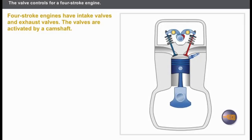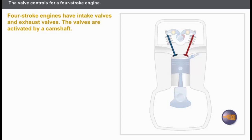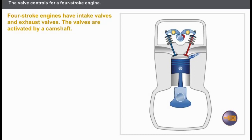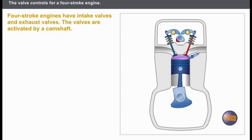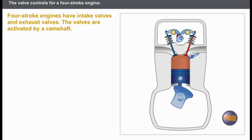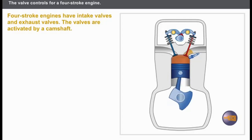Let's first examine the basic principles of four-stroke engines. The four-stroke engine uses valves to operate; the valves are activated by a camshaft. Click on the key to see the engine in operation. First stroke phase: the intake valves open to let the air-petrol mixture in. Second stroke phase: the valves close while the mixture is compressed. Third stroke phase: the valves remain closed during the combustion stroke.